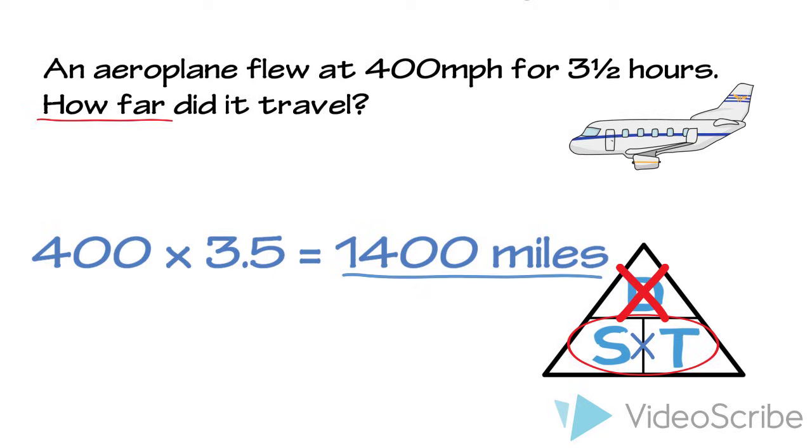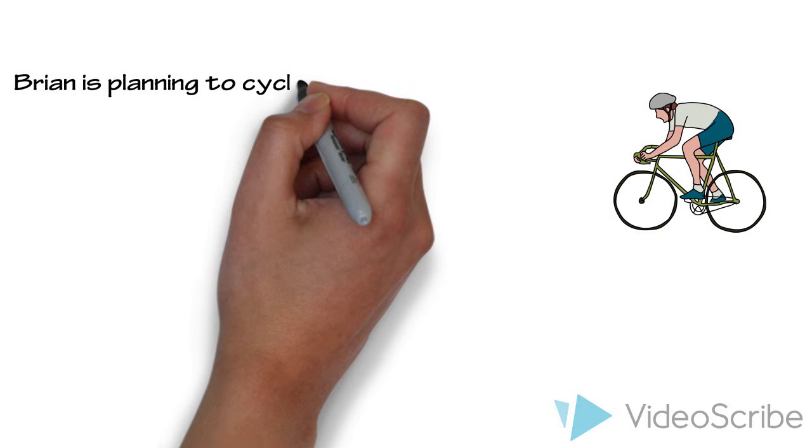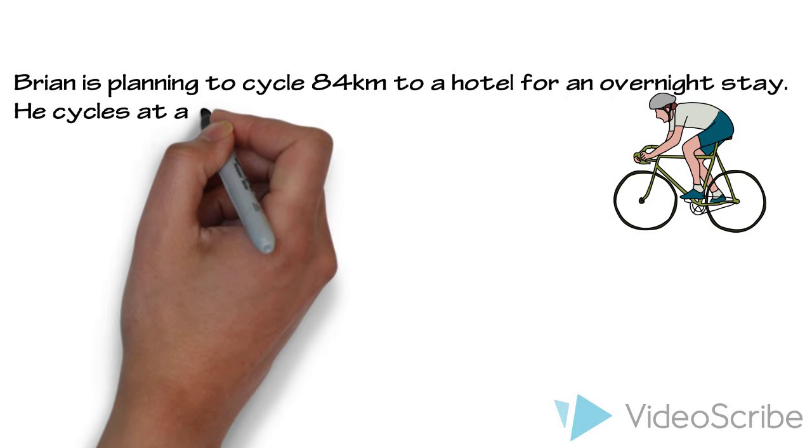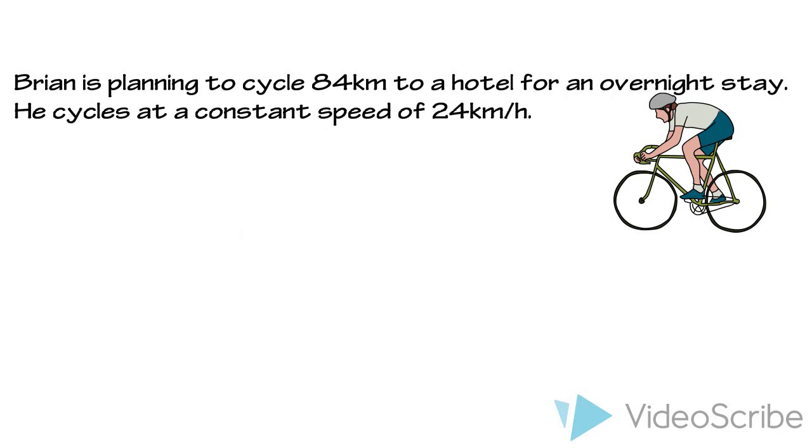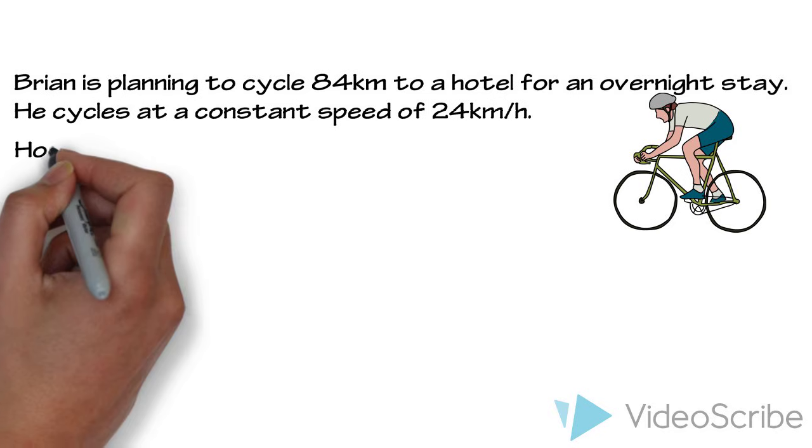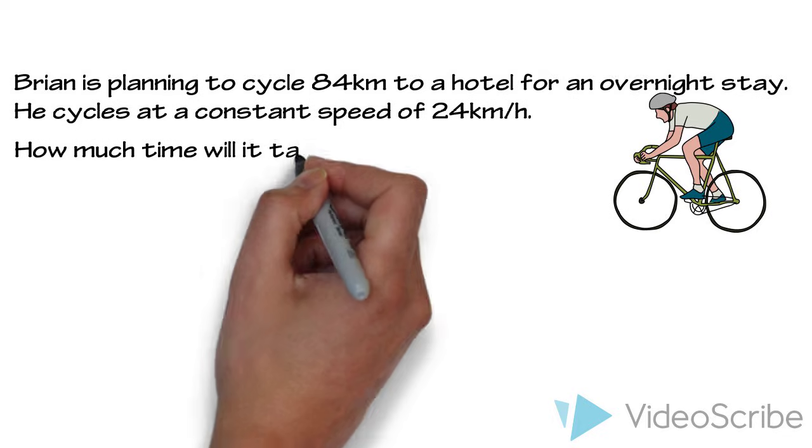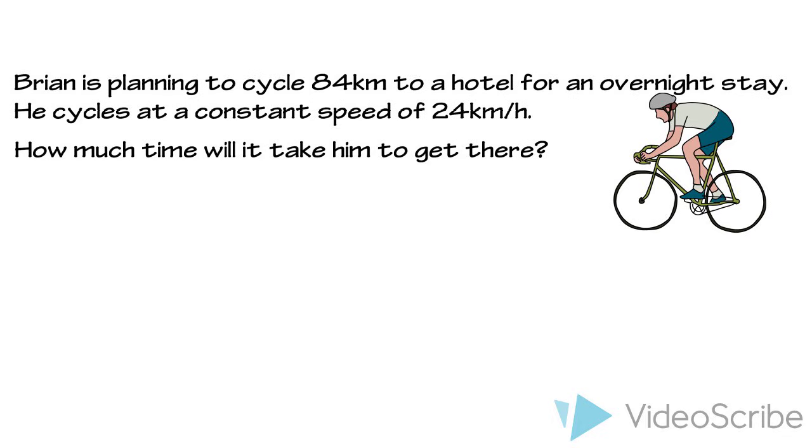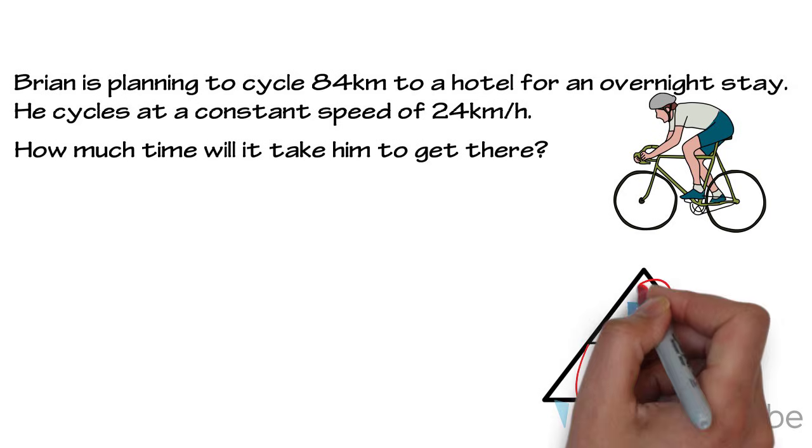Here is our final question. Brian is planning to cycle 84 kilometres to a hotel for an overnight stay. He cycles at a constant speed of 24 kilometres an hour. How much time will it take him to get there? So, on our triangle, we need to cover up the T. This shows us we need to divide our distance by speed.